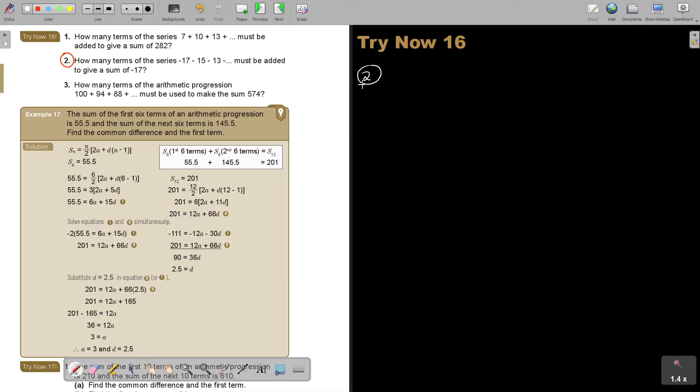How many terms of the series must be added to give the sum of negative 17? So this is very important that you see that. So it's negative 17, negative 15, negative 13, negative 11, and then I'm giving you the sum.